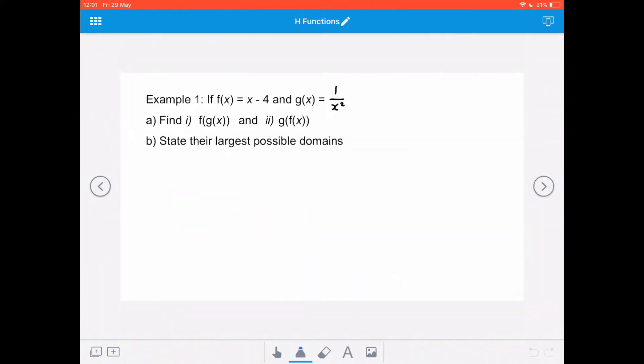So the first example, if I've got f of x equals x minus 4 and g of x equals 1 over x squared, in part a I want to find f of g of x and g of f of x. And then I want to state their largest possible domains, remembering that domain is the input to the function. So it will be the values of x that will allow this function to be true.